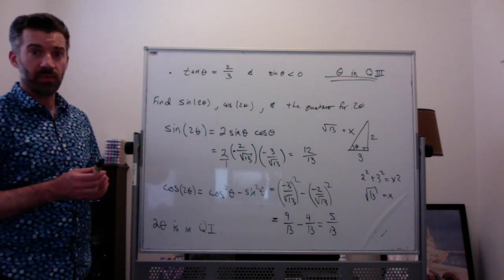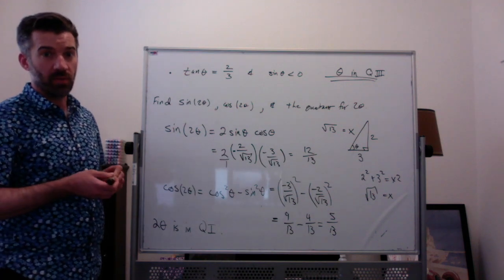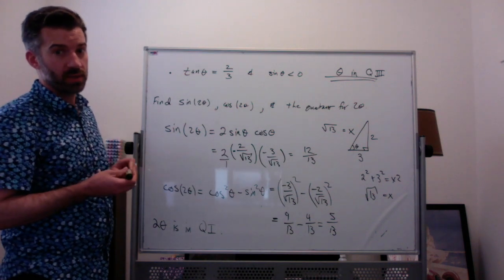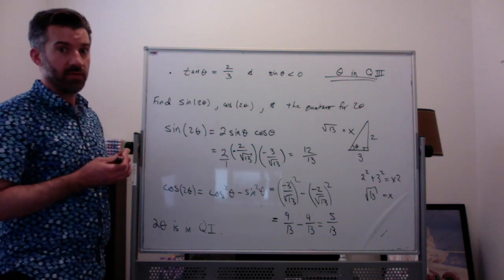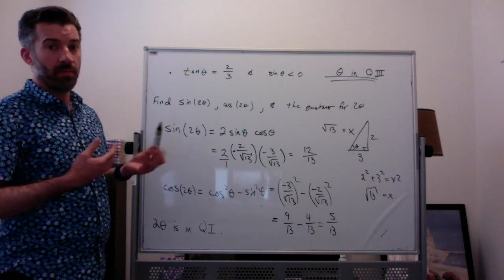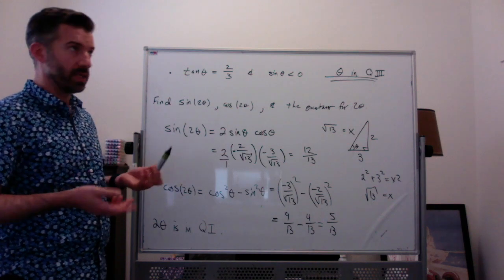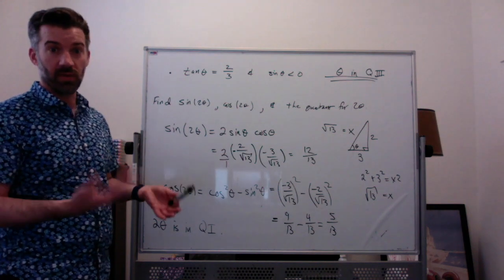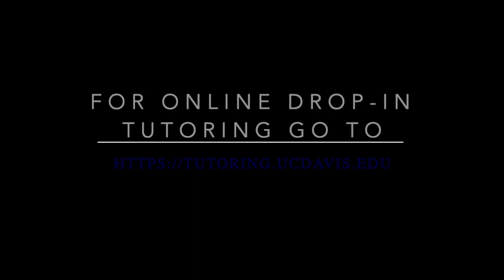So there are a couple of examples of how to use the double angle formulas to figure out what sine of 2 theta and cosine of 2 theta are, based on knowing either tangent, sine, or cosine of the original angle theta.